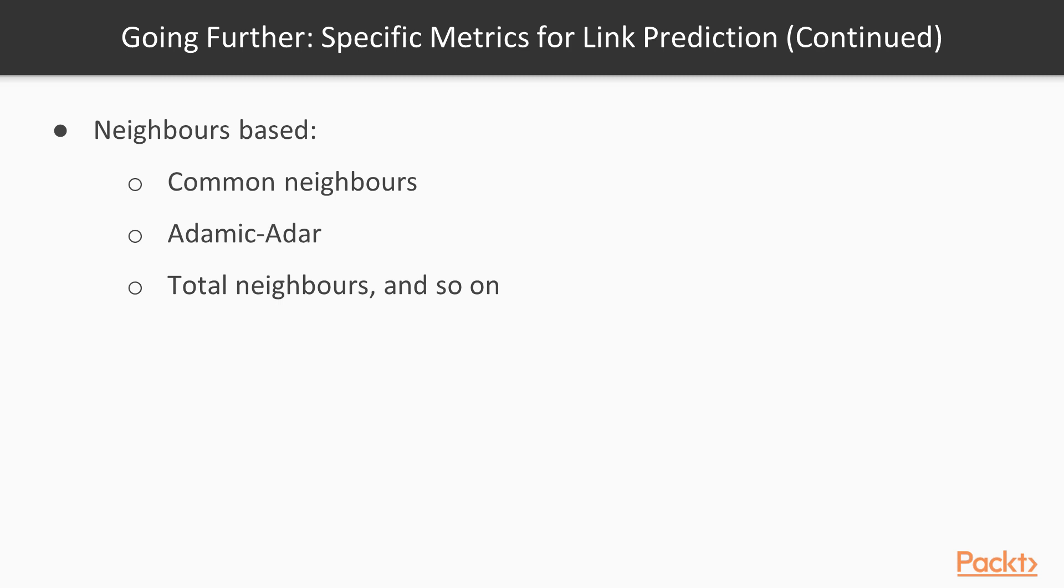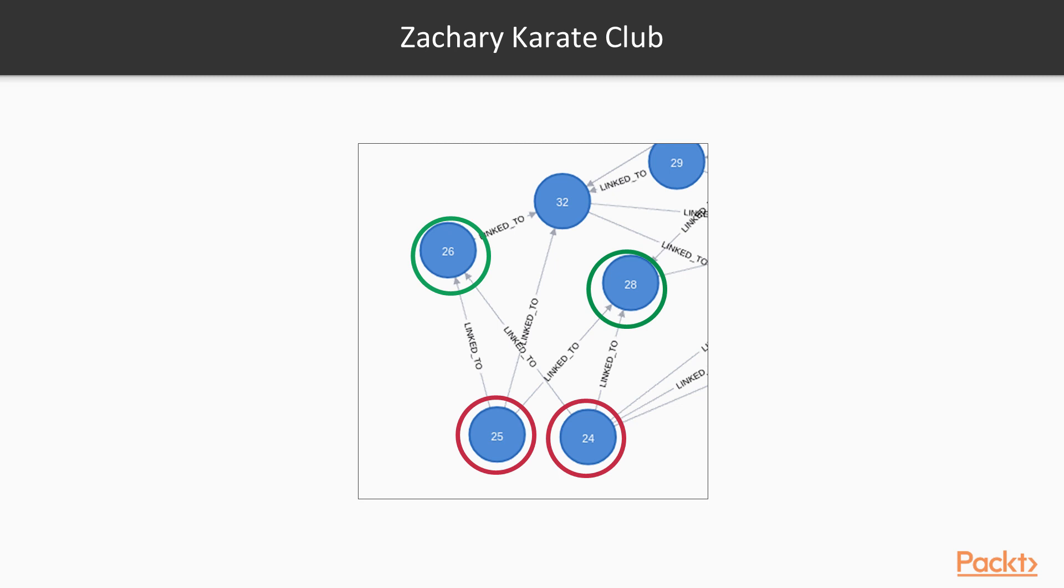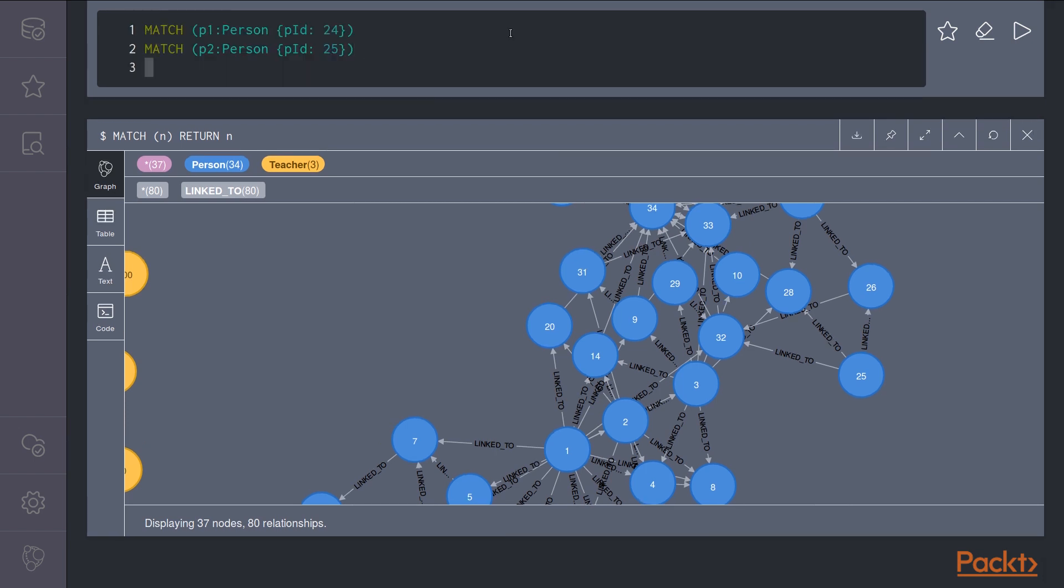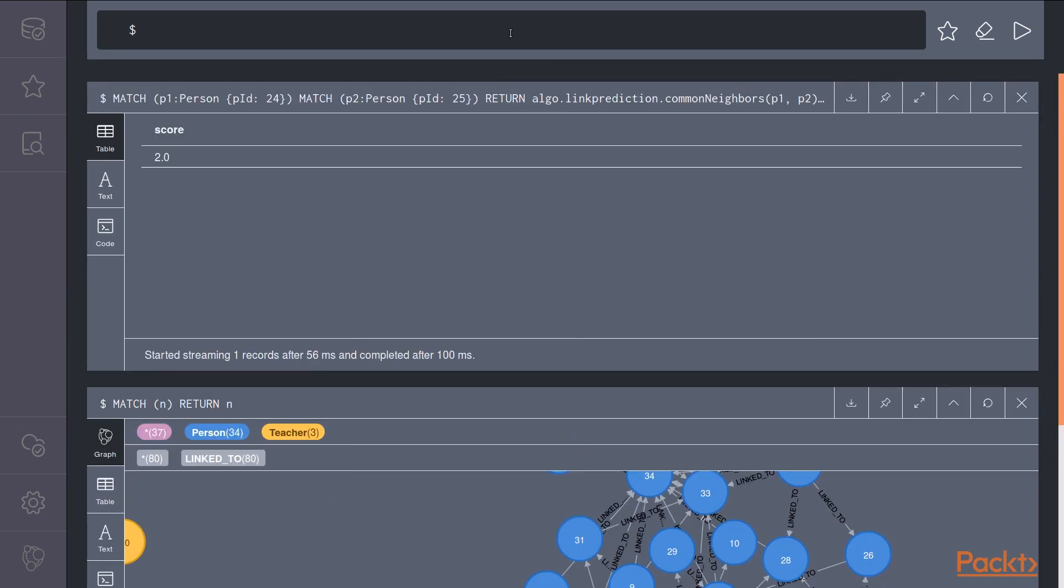There are other variants of these neighbors-based approaches. But let's see one example using the Karate Club dataset. We are interested in the link prediction between person 25 and 24. If we look at their common neighbors, we can find they have two common friends, person 26 and 28. Let's run the common neighbors algorithm for these nodes. First, we need to select those two nodes, 24 and 25. And then we can directly call the link prediction function.